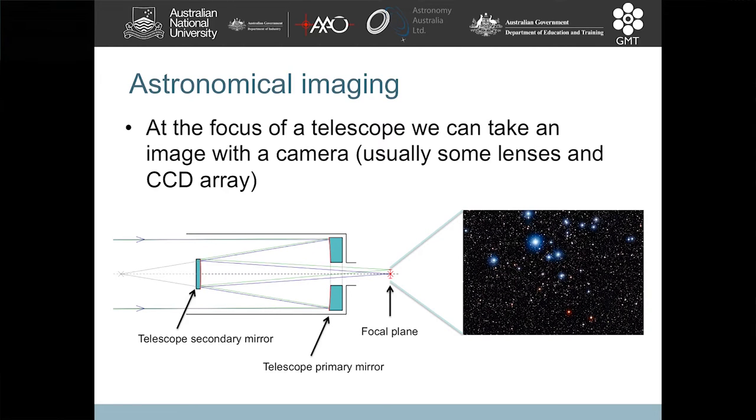There's two types of instrumentation that we can build behind a telescope. The first is an imaging instrument. So schematically, what I've got here is a telescope. Here's the primary mirror, here's the secondary mirror. The blue lines here is light coming from a very distant star, a very distant galaxy. Bounces off the primary mirror, then bounces off the secondary mirror. Then it comes to focus at this point here, which we call the focal plane. This is where you form an image.